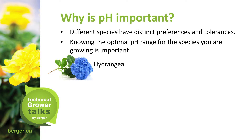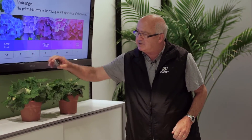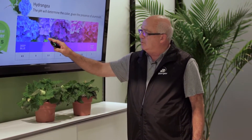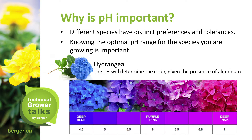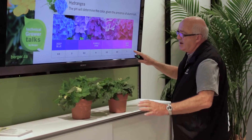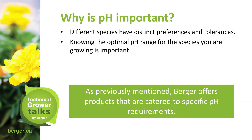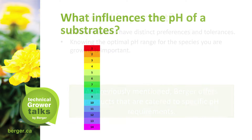Hydrangea — the pH will determine the color given the presence of aluminum. Aluminum is a micronutrient, and most micronutrients are more available at lower pHs. So in this case, we add aluminum sulfate into the soil. The aluminum at pH 4.5 is taken up in very large amounts by the plant. If the pH were at 7, the pH would not allow the aluminum to be taken up by the plant. Berger offers products catered to specific pH requirements.